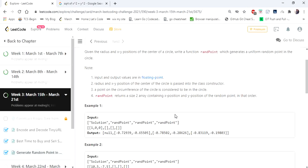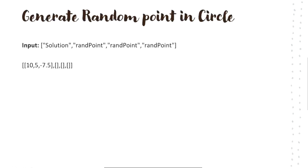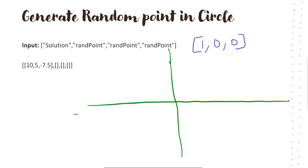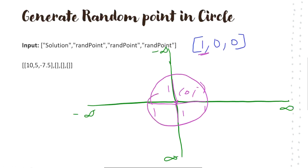Let's understand this problem with an example. According to the first example given in the problem statement, the radius of the circle is 1 and the center of the circle is (0,0). Imagine we are drawing a circle on a graph where the x-axis goes from minus max value to infinity and the y-axis goes from minus infinity to infinity. With center at (0,0) and radius 1, the circle extends one unit in all four directions, and you have to return any random x,y coordinate on the circumference of the circle.